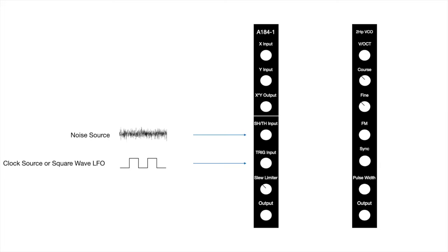What we're going to do is feed a random white noise source into the sample and hold input, and a clock source into the trigger input. Each time a clock pulse is detected, the frequency and amplitude of the noise source will be held at that given moment until the new clock trigger is detected.